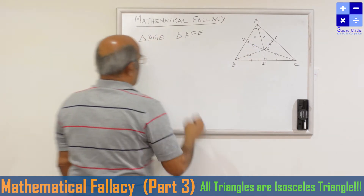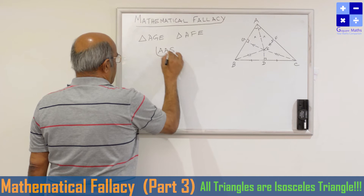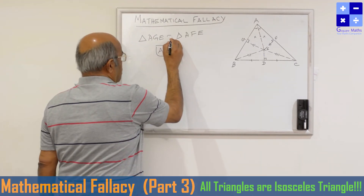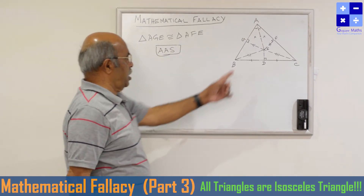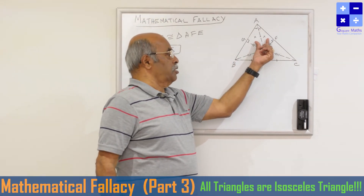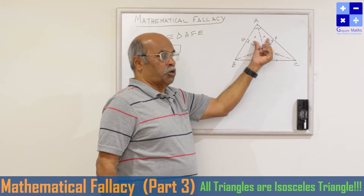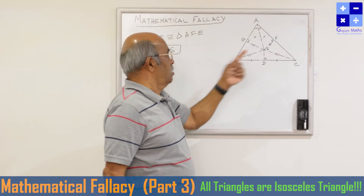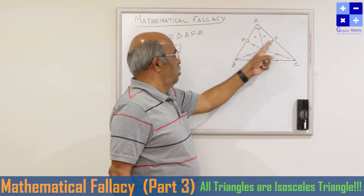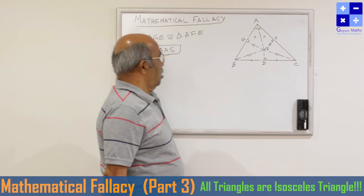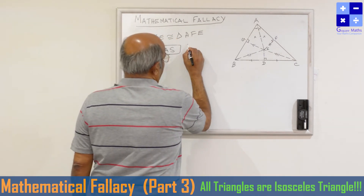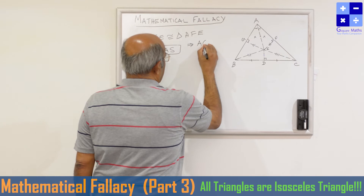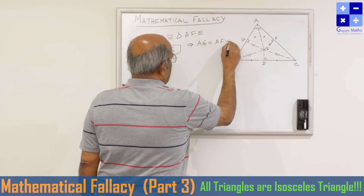In the first pair of triangles, by angle-angle-side (AAS) criteria, these two triangles are congruent. The angle from the bisector is equal, the right angle is 90 degrees equal, and one side is common. Therefore the two triangles are congruent, which implies all sides are equal. Therefore AG is equal to AF — equation 1.